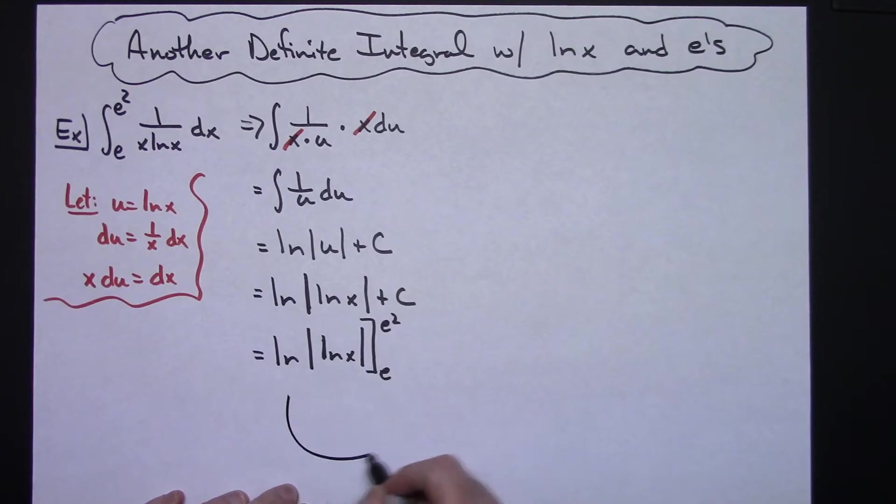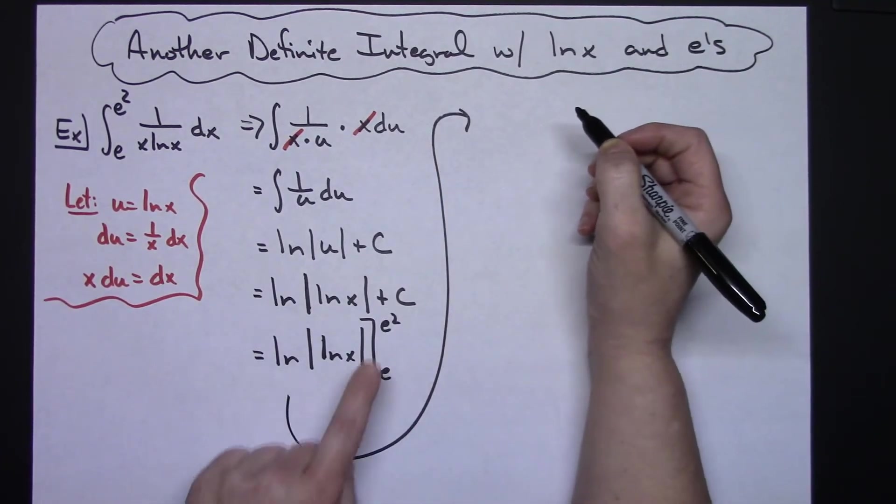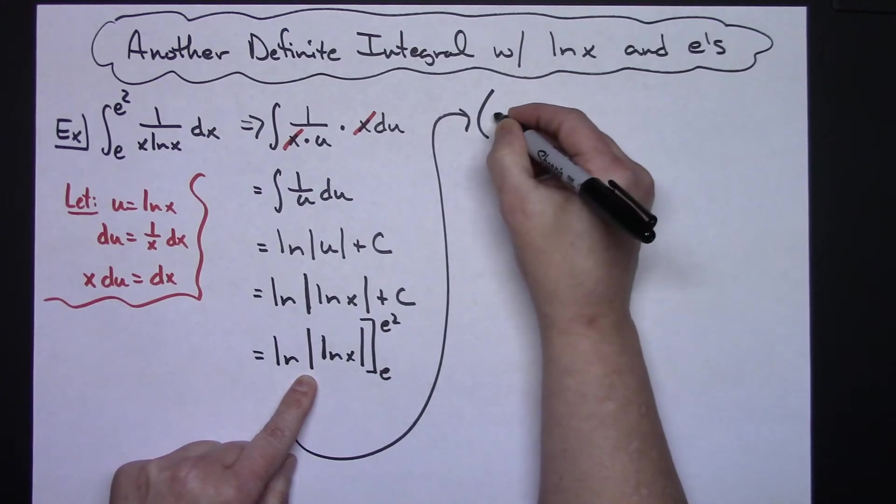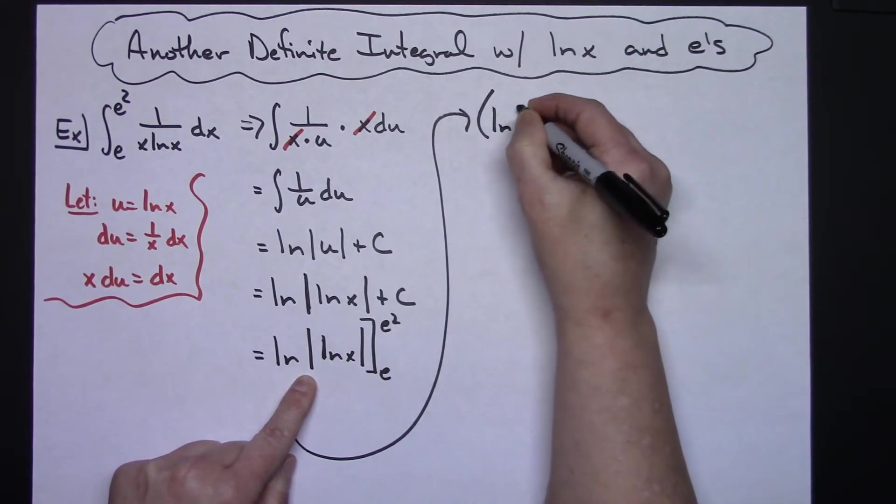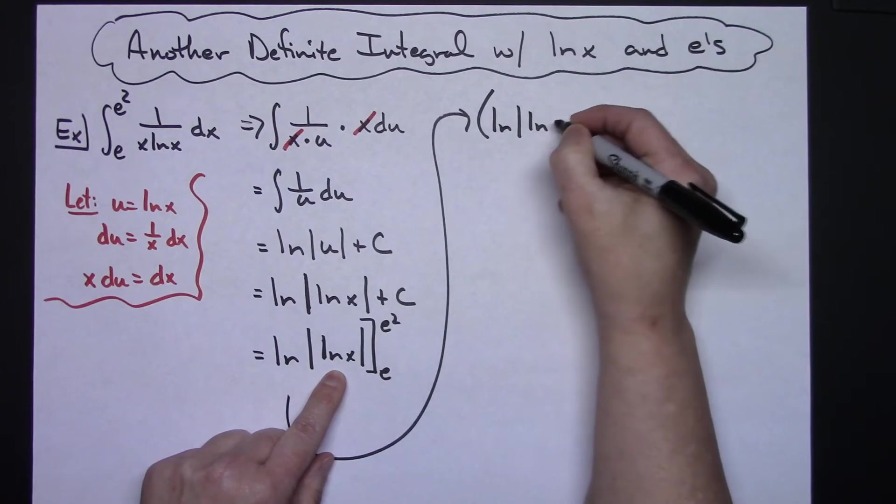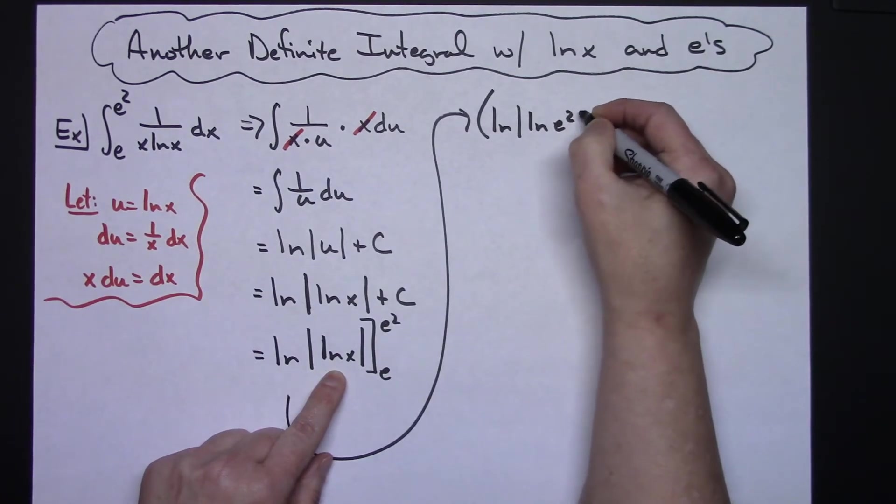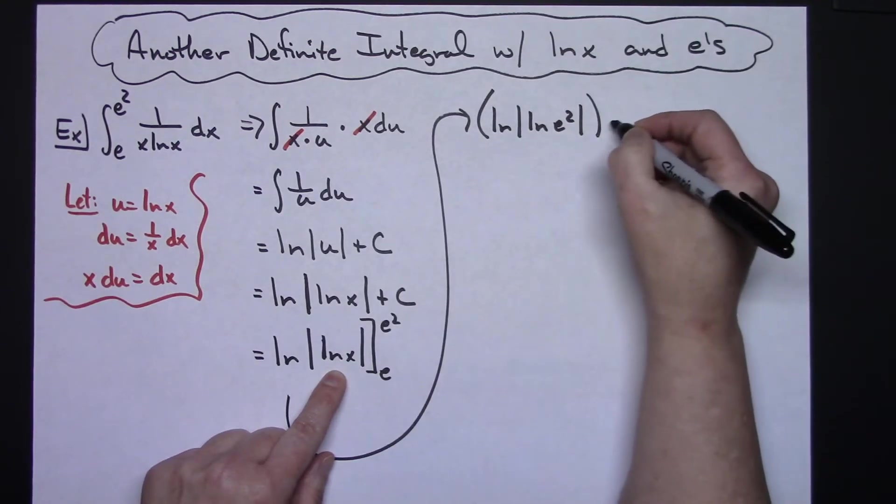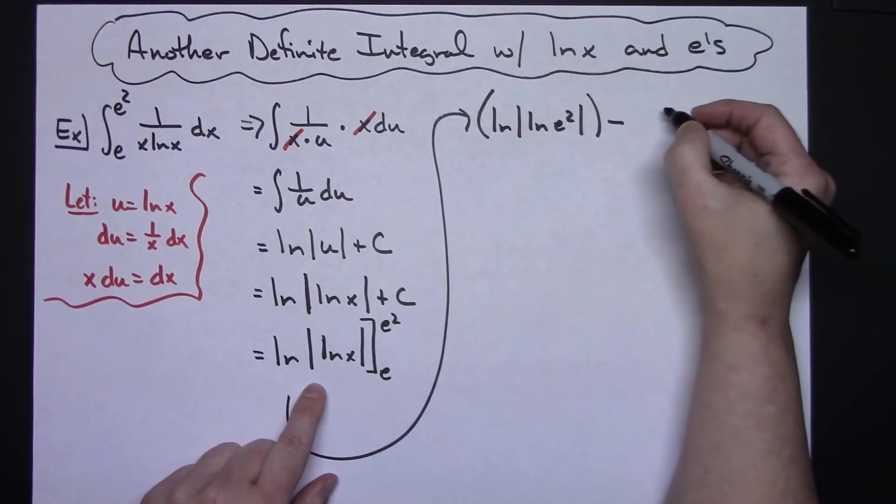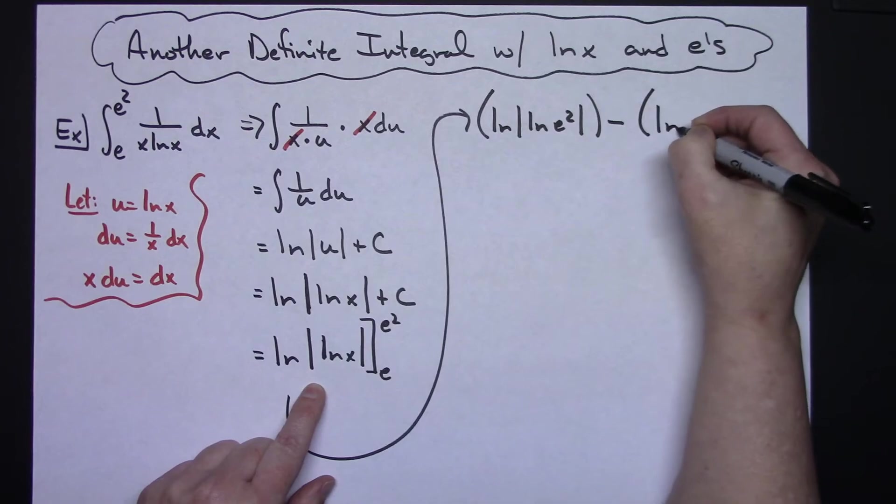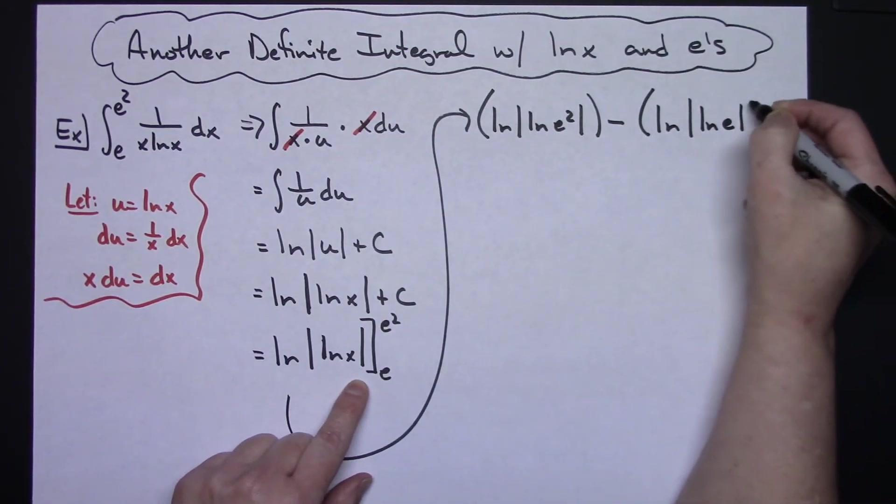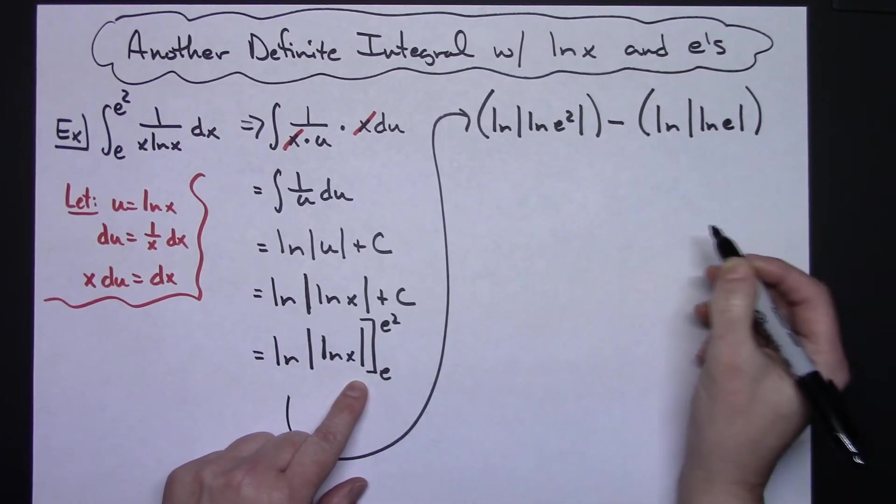Let's finish this. We're going to be plugging in e to the second, so I'm going to have natural log absolute value natural log of e squared, and then minus plugging in e, natural log absolute value natural log of e.